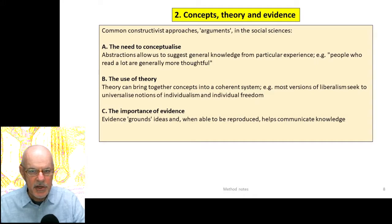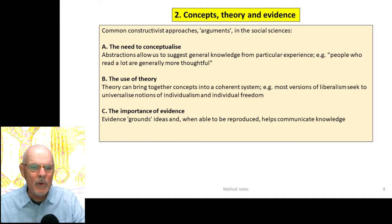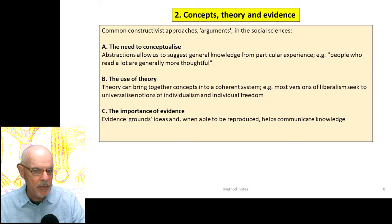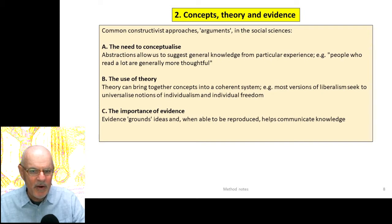Section two: concepts, theory and evidence. In common constructivist approaches in the social sciences, we need to conceptualize — to draw more general knowledge out of particular experiences. If we're only talking of particular experiences, we can't convey knowledge meaningful to other people. The abstractions of conceptualizing a problem allow us to suggest general knowledge from a particular experience. For example, 'people who read a lot are generally more thoughtful' — that's a theory; it could be tested. Theory is a body of concepts, bringing concepts together into a coherent system.